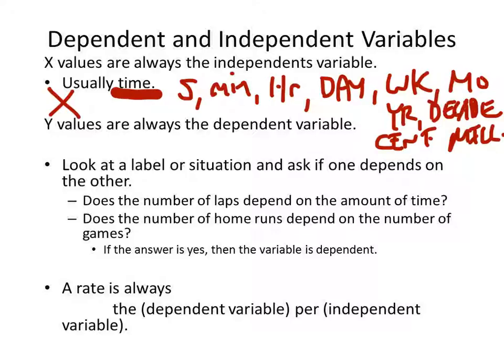Look at a label or a situation, ask if one depends on the other. So, for example, does the number of laps depend on the amount of time? Yes. Well, yes. How many laps you run depends on how much time has passed.